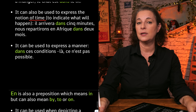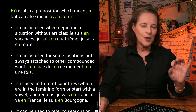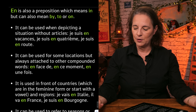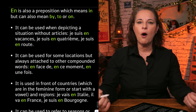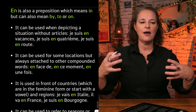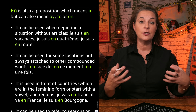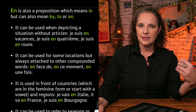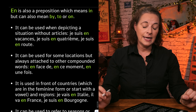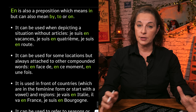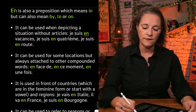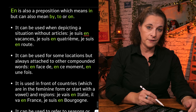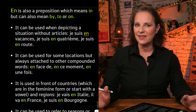Let's have a look at the difference between dans and en. En is also a preposition but can be translated as 'in' as well as dans — also 'by', 'to', or 'en'. This is where you get confused about when to use dans and when to use en, because they both mean 'in'. En can be used when depicting a situation without article. For example, je suis en vacances — I am on holiday. There is no article before that; you don't say je suis en les vacances.